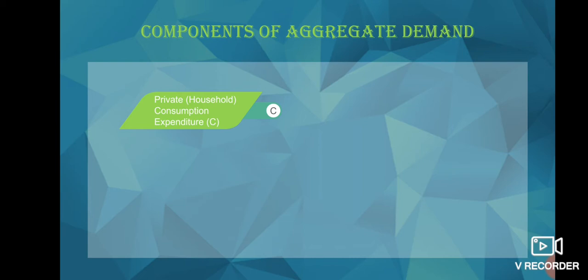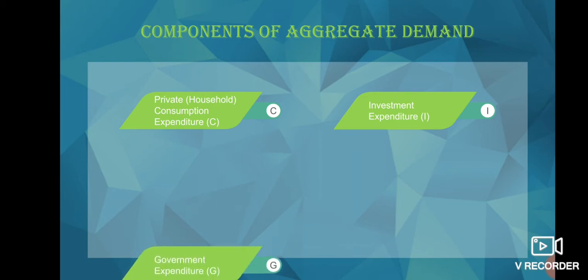Coming back to the point, private or household expenditure, denoted by capital C, is the total expenditure incurred by households on the purchase of goods and services in an accounting year. Next is investment expenditure. Investment expenditure is the total expenditure incurred by all the private firms on capital goods.